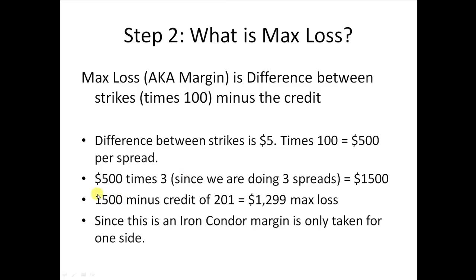Now we subtract the credit: $1500 minus $201 equals $1299, which is our max loss — the most we can lose on the trade. The credit of $201 is the most we can make. This max loss figure is also the margin, meaning your broker will require you to have $1299 in your account to cover this trade. If you don't have it, you can't do the trade.